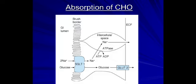Glucose is absorbed from the brush border of the intestinal lumen via the sodium-glucose transporter, where glucose is co-transported along with sodium into the cell. From the cell into the blood vessel, glucose is absorbed in the presence of GLUT-2 transporters.